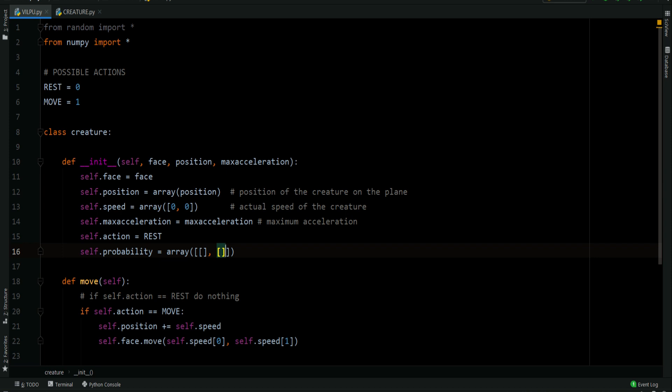The first row says that, if the creature is at rest, there is a 99% probability that remains at rest, and 1% probability that starts moving around. Vice versa, the second row tells us that, if Vilpu is moving, it has a 99.5% probability to continue moving around, and only a 0.5% probability to stop.